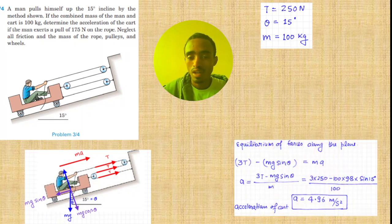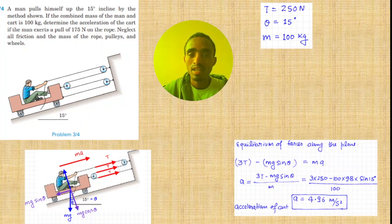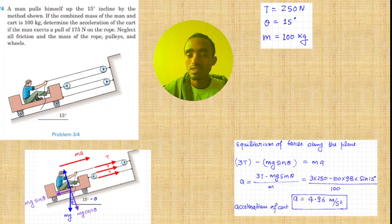So we can use the concept of equilibrium and simply solve this problem. As you can see here, 3T in this direction minus mg sin theta in this direction equals mass times acceleration. Then acceleration equals 3T minus mg sin theta over m. After this we can substitute the given value and it equals to 4.96.